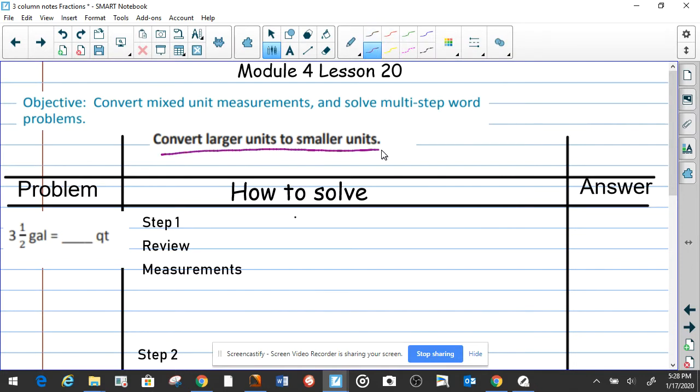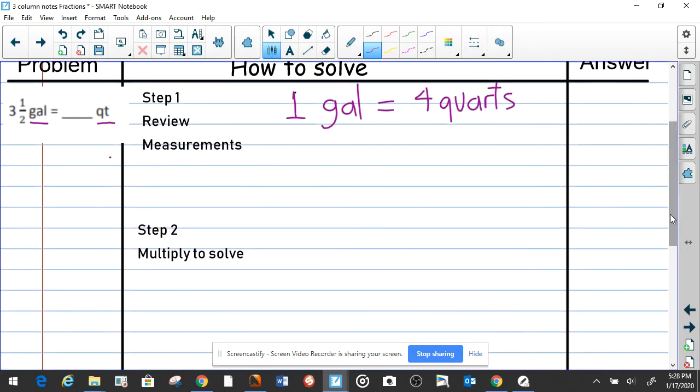Convert larger units to smaller units. We're going to convert gallons, which is a large unit, to quarts. Let's remember that one gallon equals four quarts. That is important because it's going to help us on our transaction here.